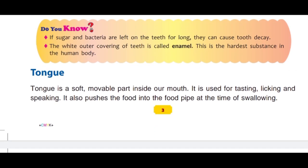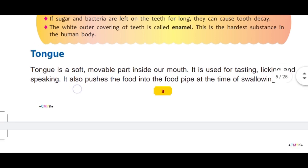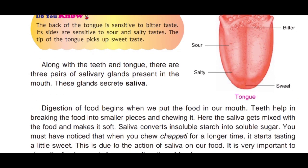Now about the tongue. Tongue is a soft movable part inside our mouth. It is used for tasting, licking and speaking. Tongue ka kaam hai taste karna, chaatna, aur bolne mein help karna. It also pushes the food into the food pipe at the time of swallowing. Along with the teeth and tongue, there are three pairs of salivary glands in the mouth. These glands secrete saliva, which is very helpful in digestion.